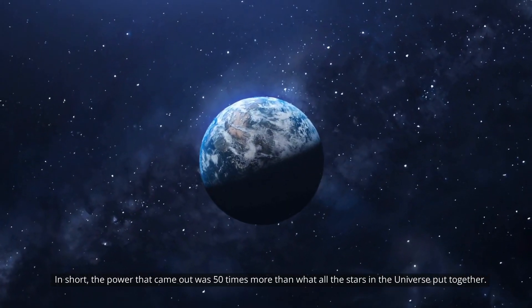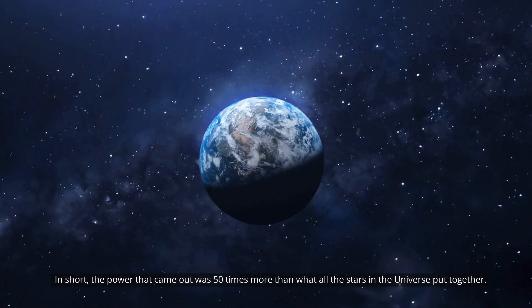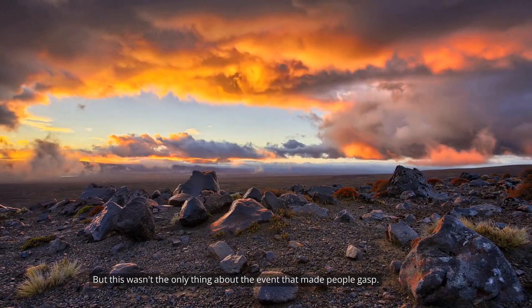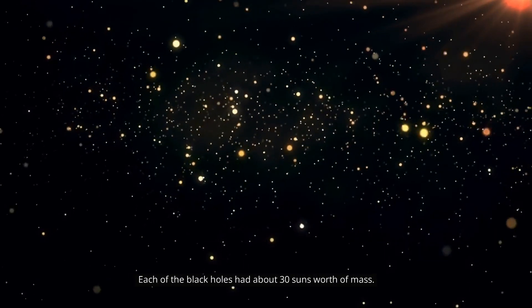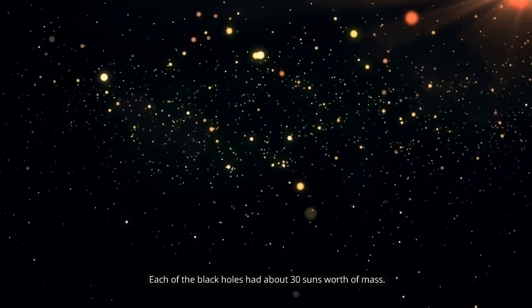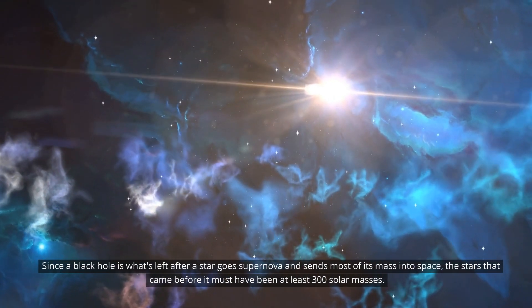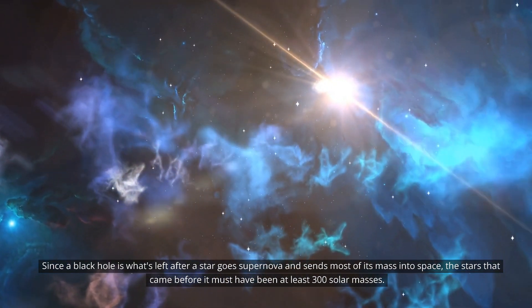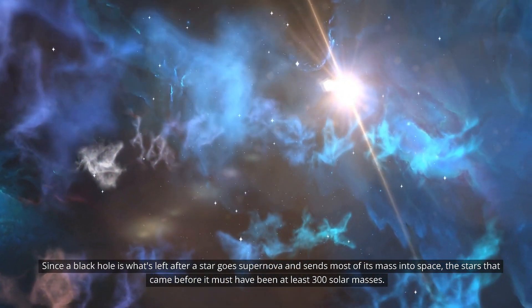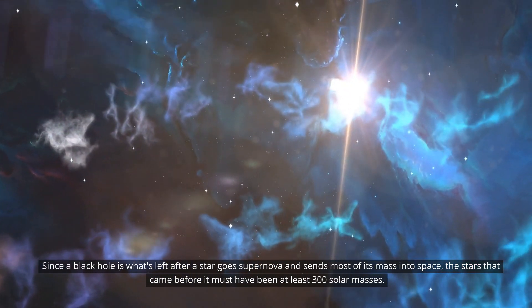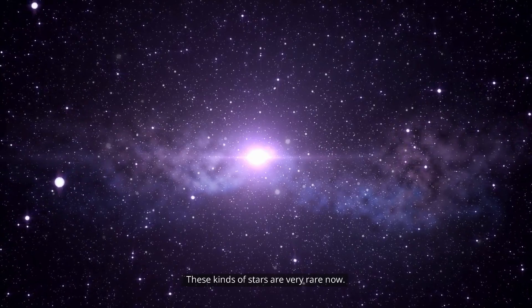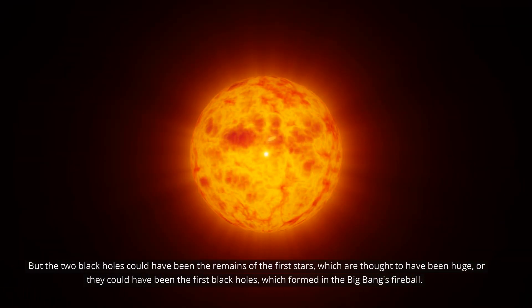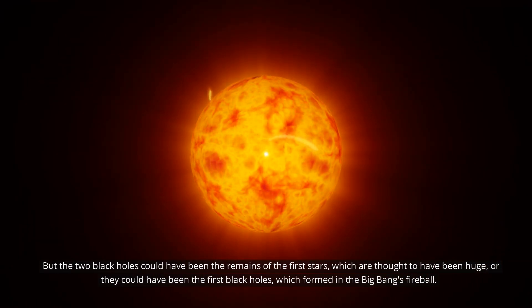In short, the power that came out was 50 times more than what all the stars in the universe put together. But this wasn't the only thing about the event that made people gasp. Each of the black holes had about 30 suns worth of mass. Since a black hole is what's left after a star goes supernova and sends most of its mass into space, the stars that came before it must have been at least 300 solar masses. These kinds of stars are very rare now.